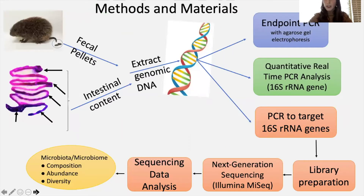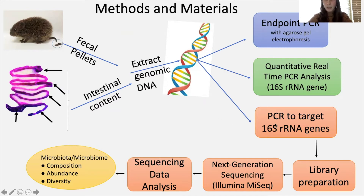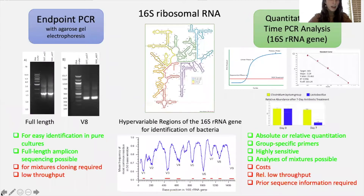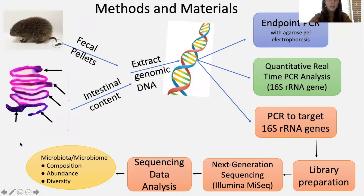We used fecal pellets and intestinal content to extract genomic DNA using endpoint PCR, quantitative real-time PCR, and also PCR to target 16S rRNA genes. The 16S PCR was then followed by library prep, next-gen sequencing, and sequencing data analysis to give us the composition, abundance, and diversity of the microbiome.